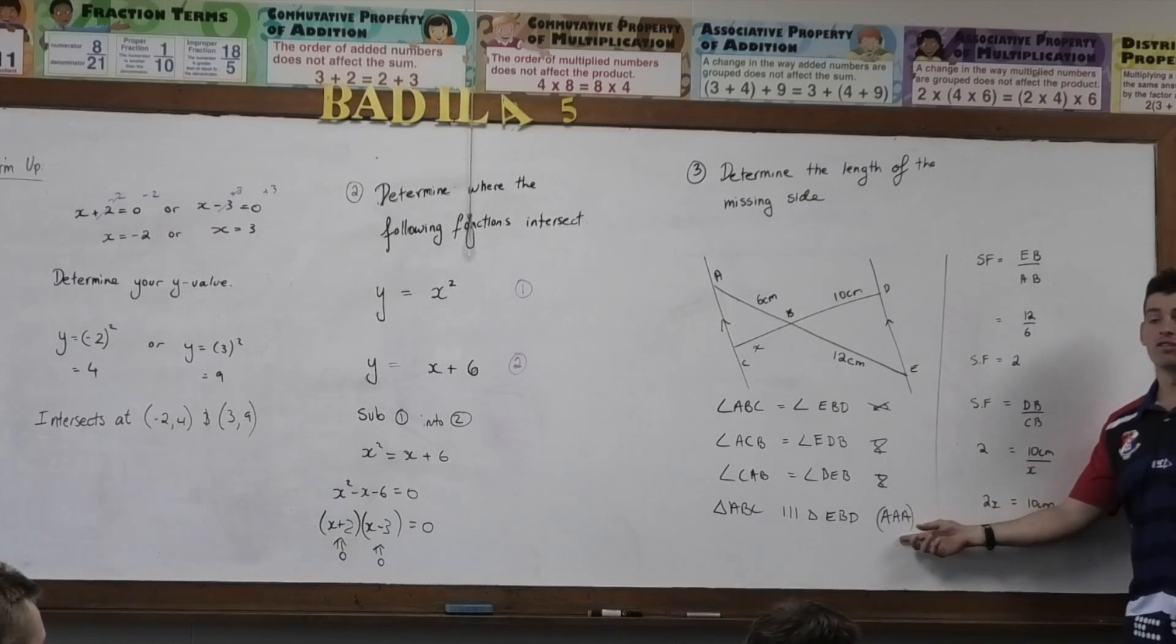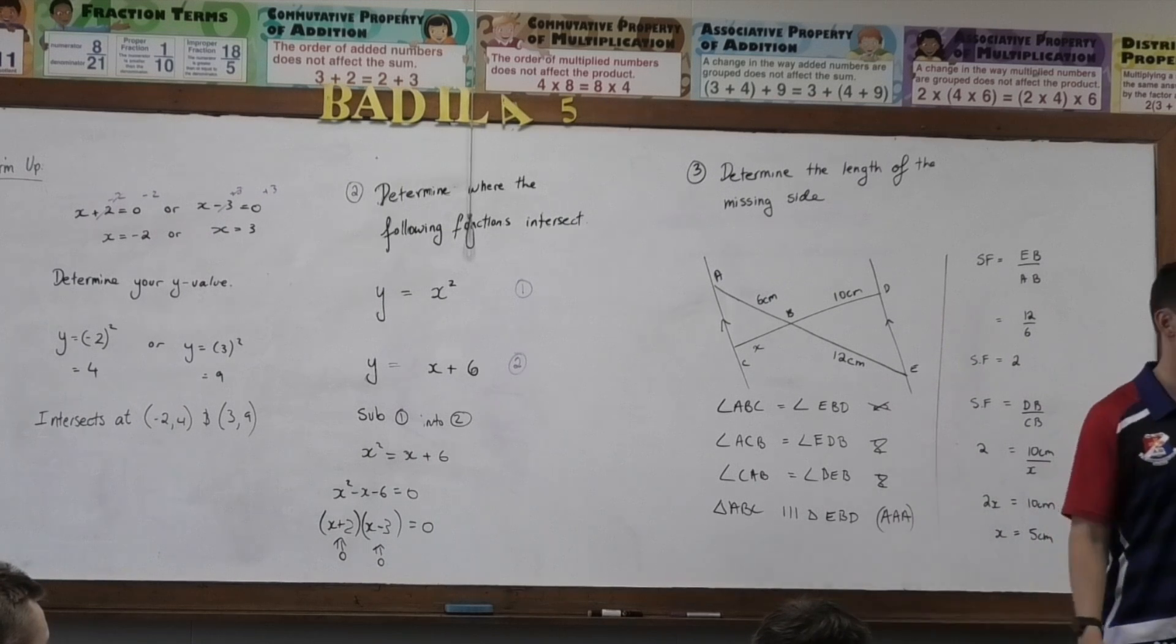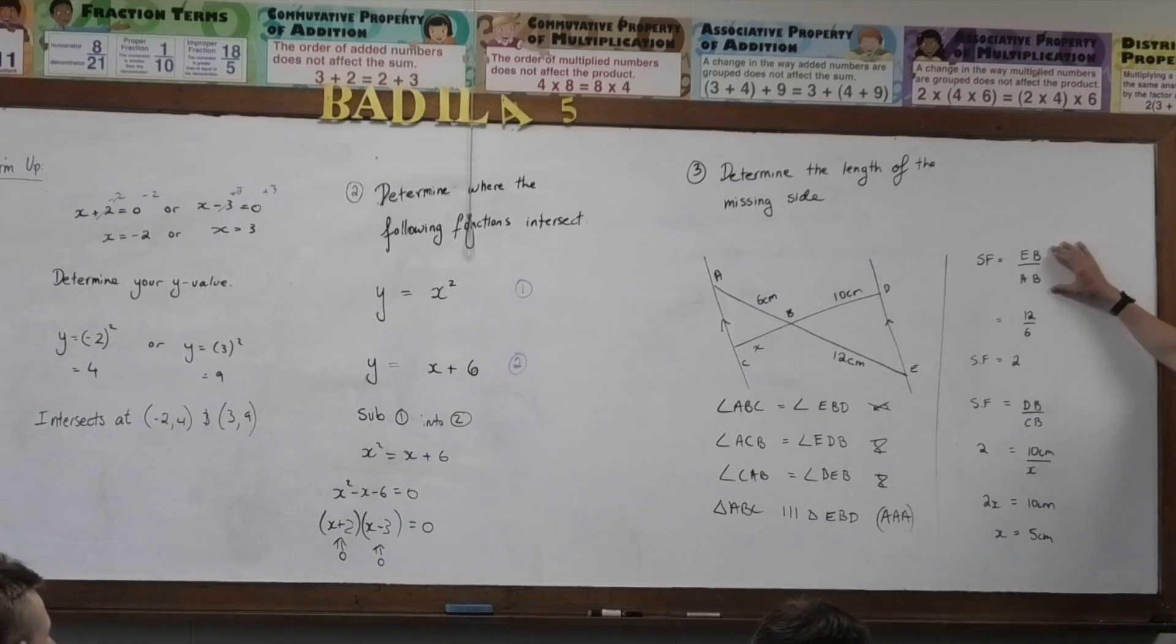Once I've got my proof of similarity, I can then introduce my scale factor. This is slightly different to how I did it before. Same thing, though. Exactly the same thing. In the one before, I had EB over AB equals DB over CB. It's exactly the same thing.